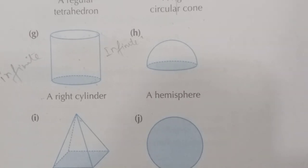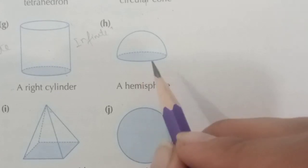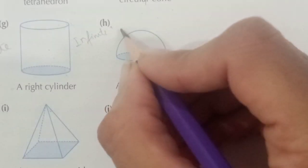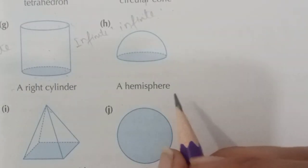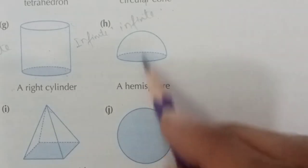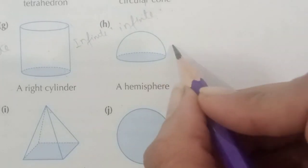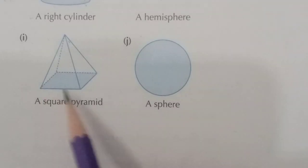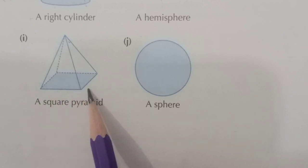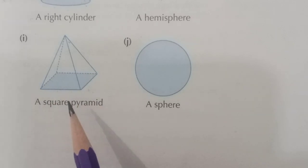Part H is a hemisphere. The base is a circle, so the number of planes of symmetry is infinite. The number of axes of rotational symmetry is 1 — only the central middle line.